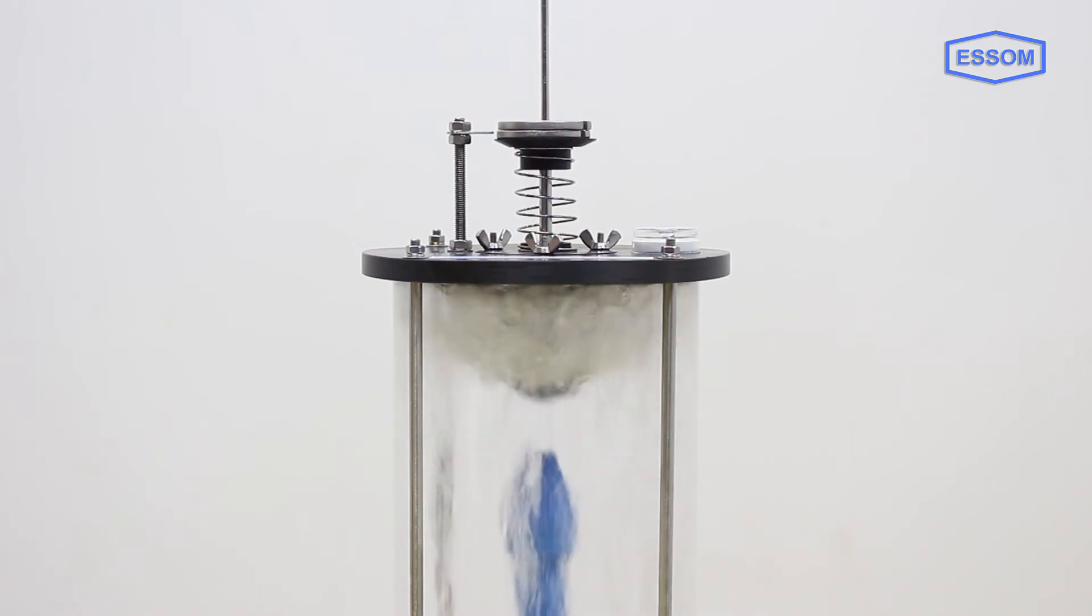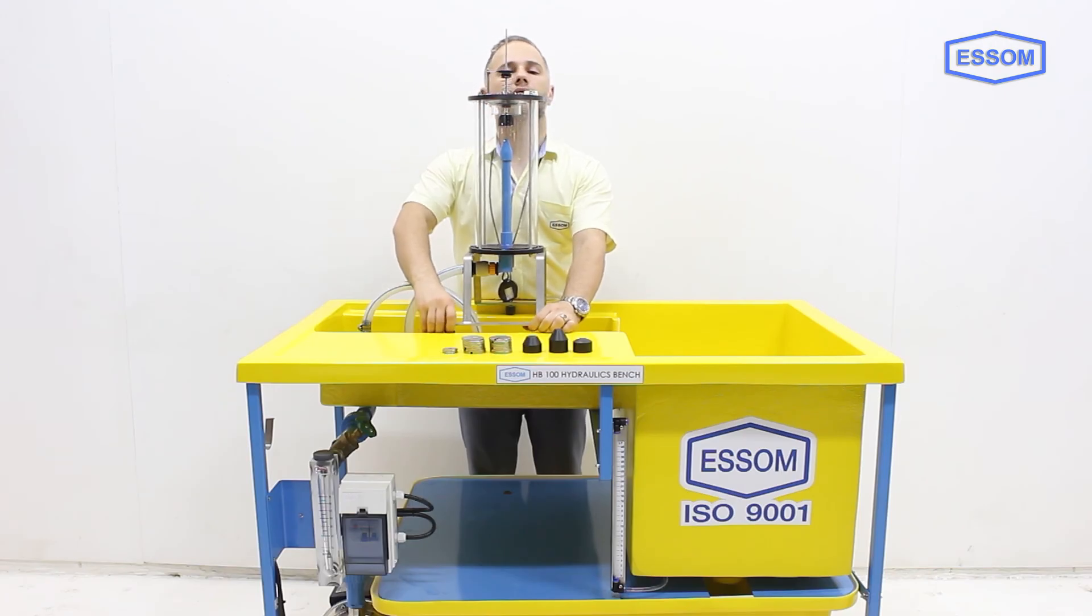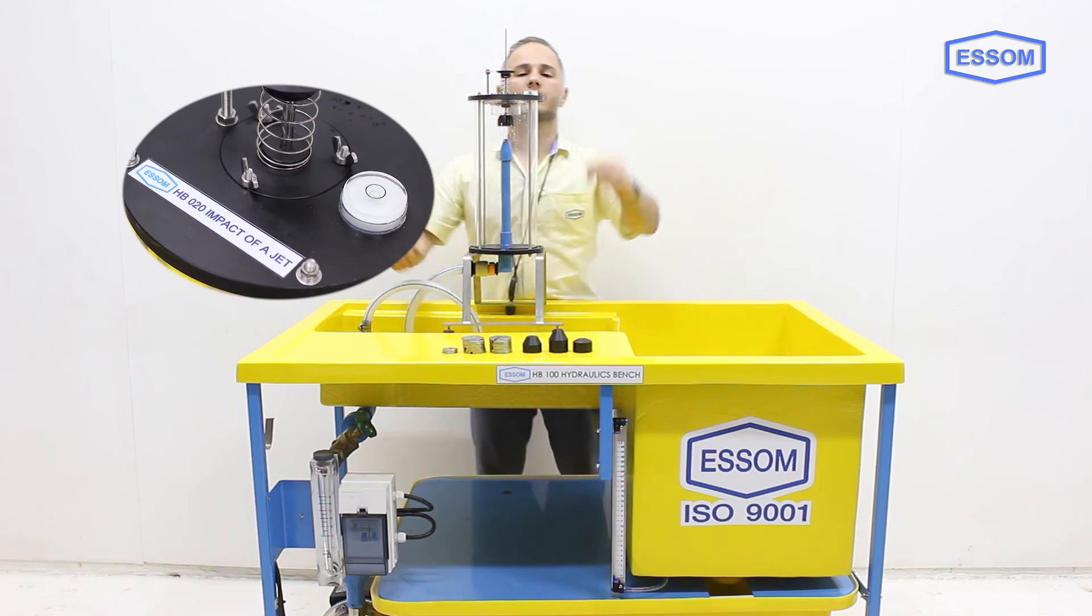This balance is indicated by a pointer on a steel rod next to the weight. The apparatus rests on adjustable footings and a bull's eye level is provided.